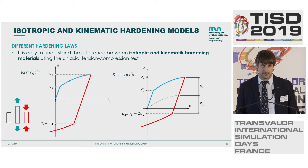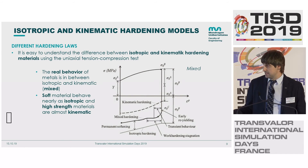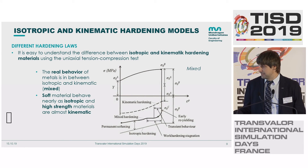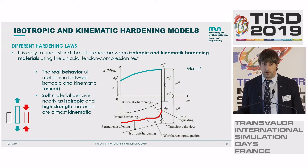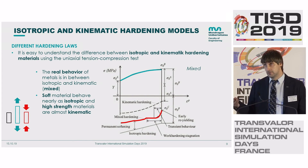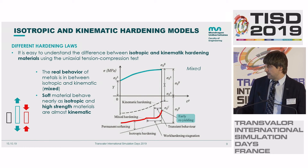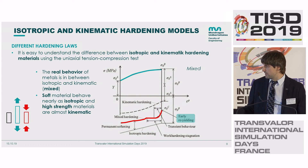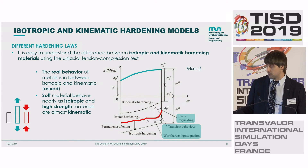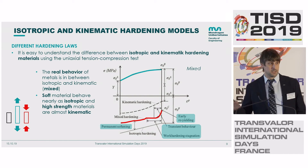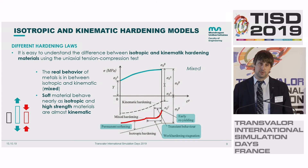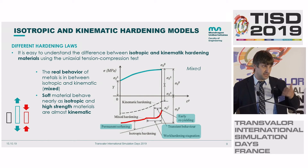In reality, we have neither pure kinematic nor pure isotropic — something in between. We have three aspects: early re-yielding before the isotropic model, a transient behavior, a plateau called work hardening stagnation, and permanent softening. Putting these into models could produce some changes.